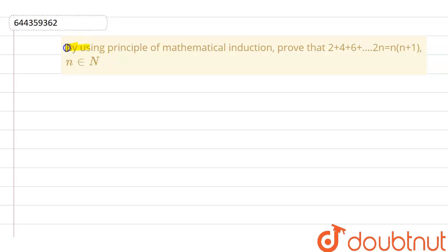In this question, by using the principle of mathematical induction, we have to prove that 2 + 4 + 6 + ... + 2n = n(n+1). Writing this equation: 2 + 4 + 6 + ... + 2n = n(n+1).